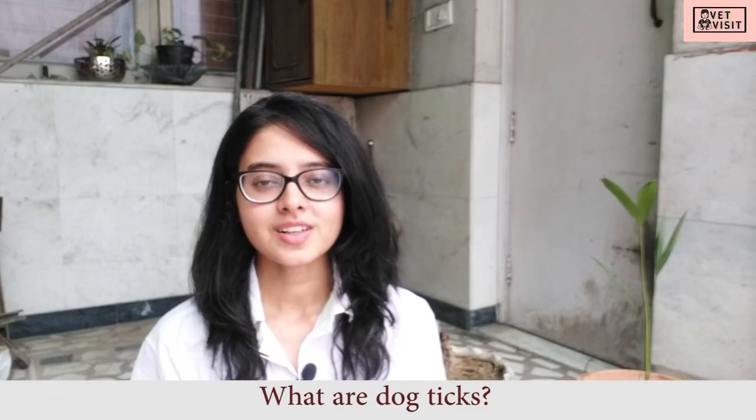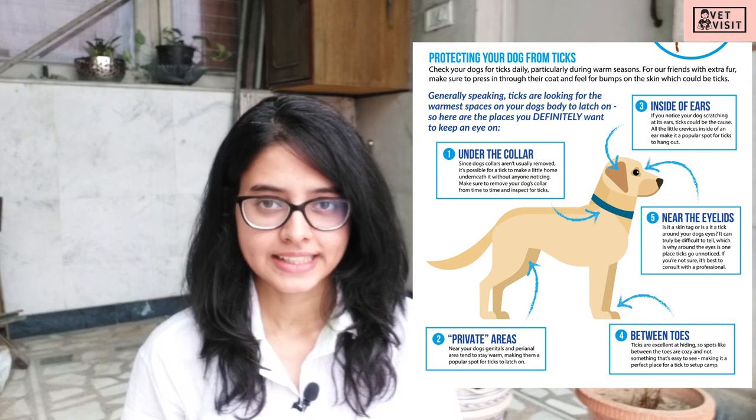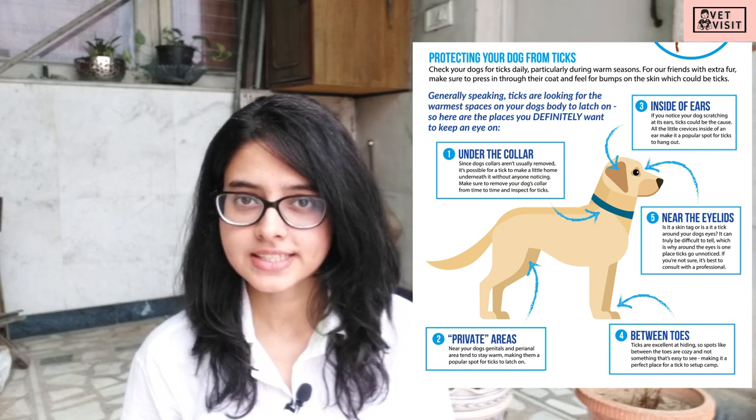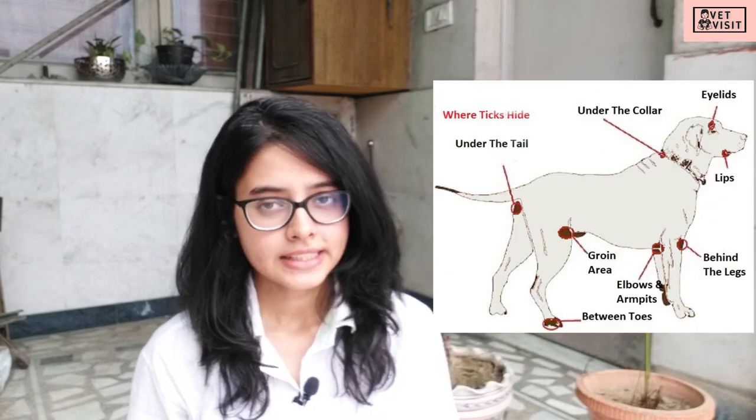First of all, what are ticks? Many of you must be knowing that ticks are the ectoparasites found over the dog's body, chiefly under the collar, the genital areas, near the eyelids, inside or outside the ears, between the toes, near the anus, under the tail, and the armpit region. Ticks do not jump or fly, rather they just crawl and attach themselves to the body of the animal. The most common types of ticks found in India are brown dog tick and deer tick, also known as black-legged tick.